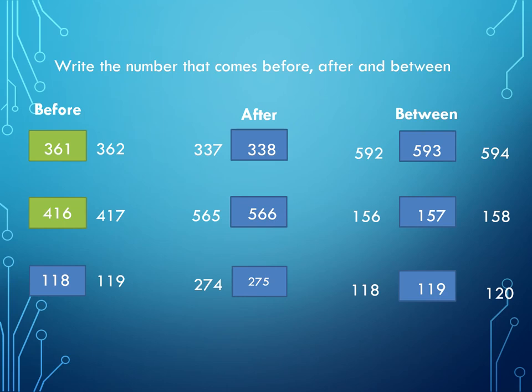Next we have 417, so 4 will remain the same and what comes before 17? Yes, 16, so we will write 416. Next we have 119, so what comes before 19? Yes, 18, so we will write 118.